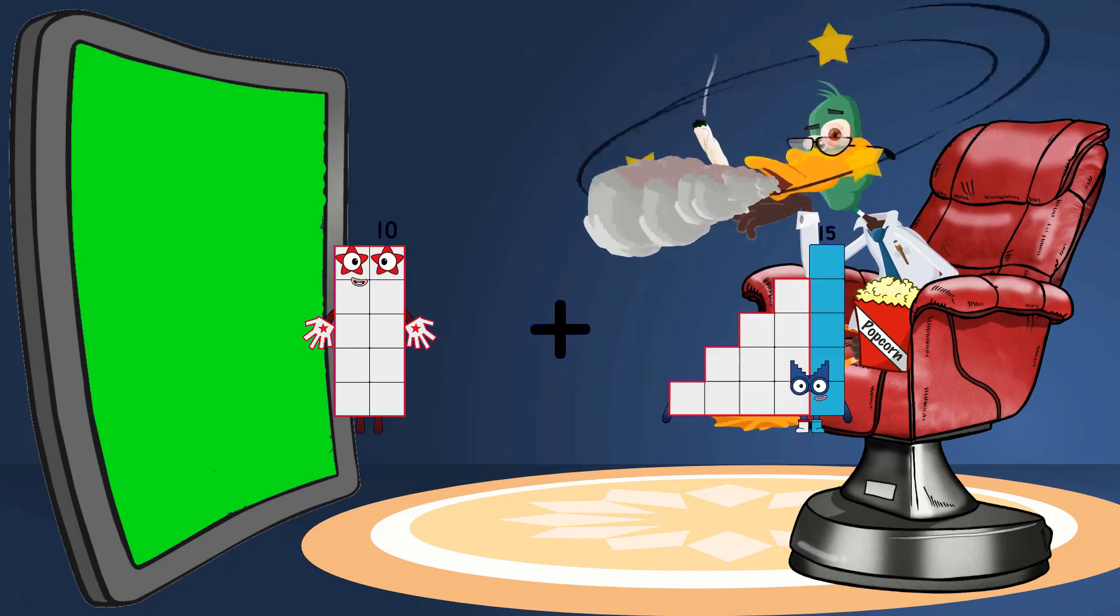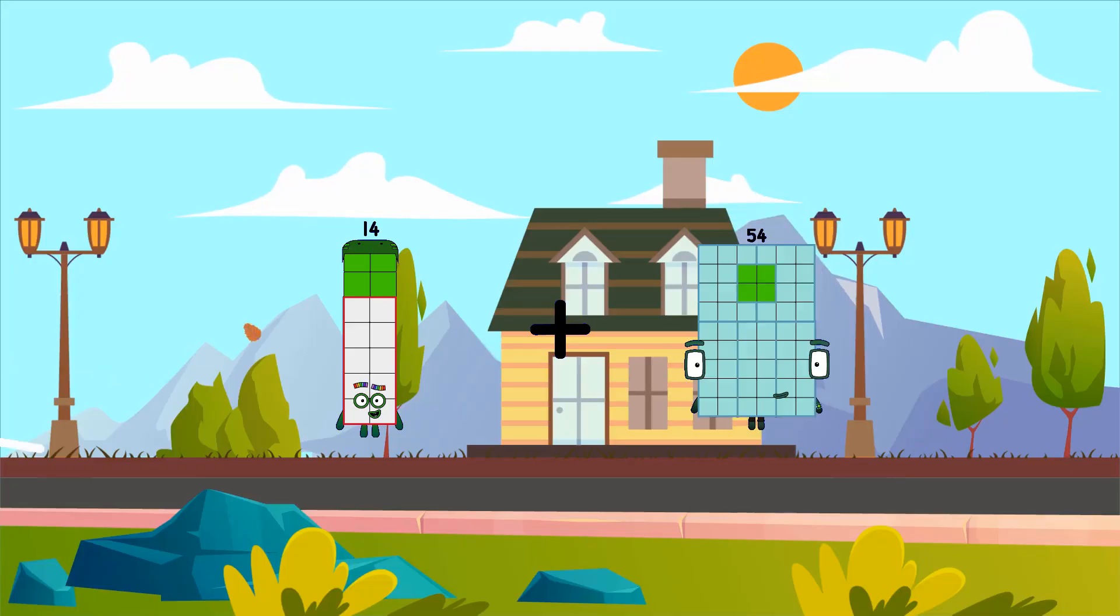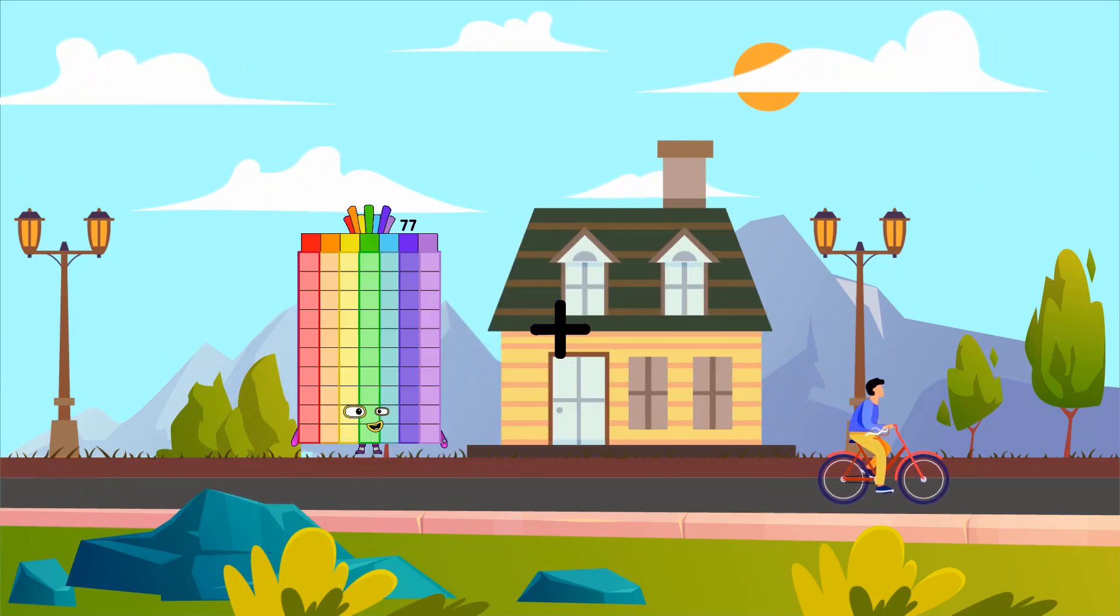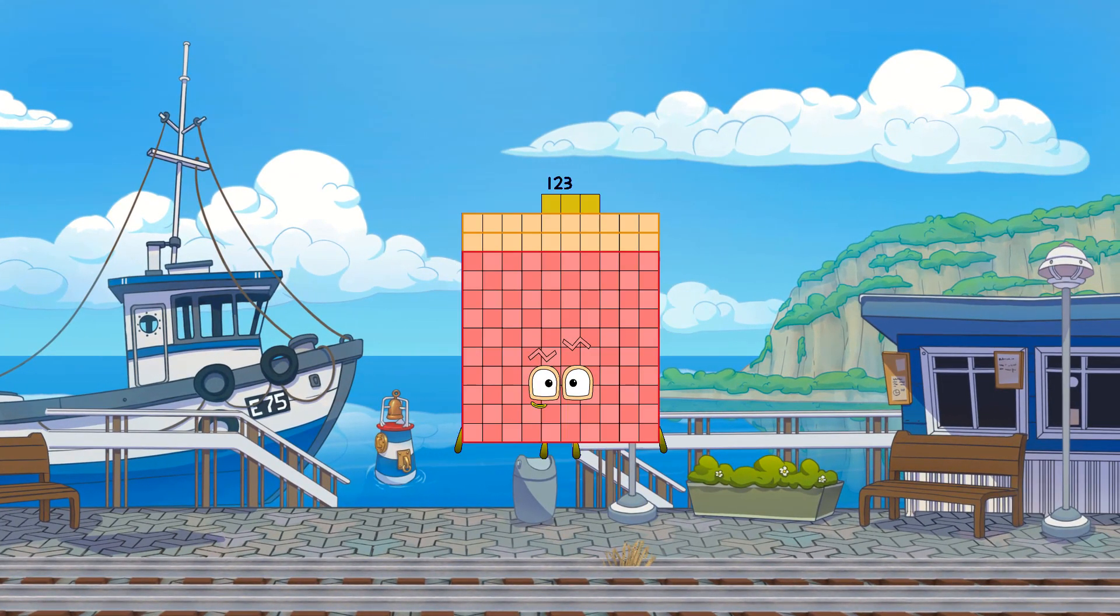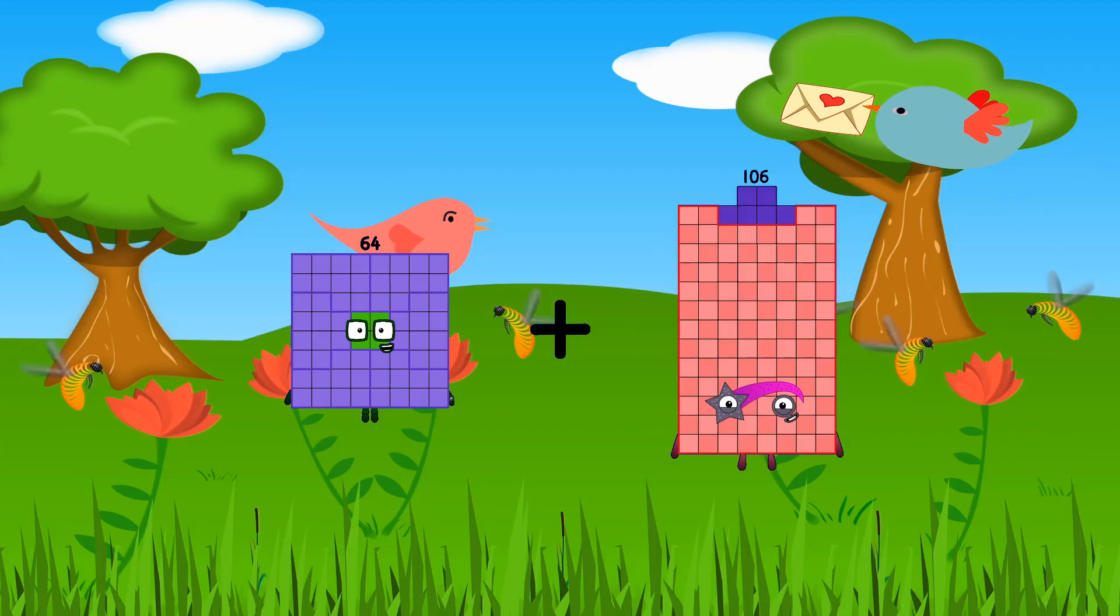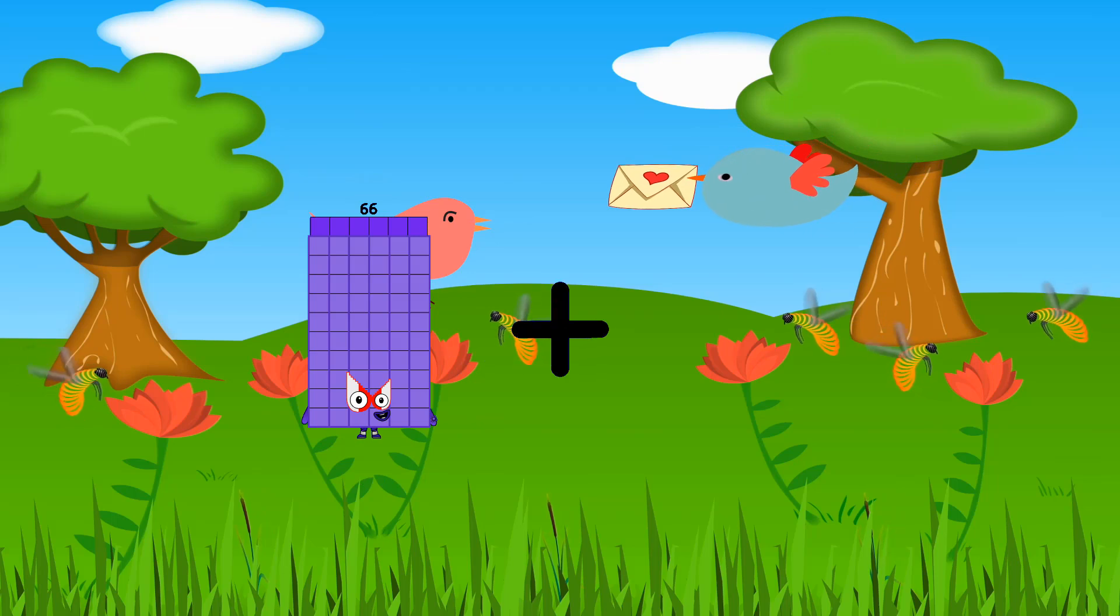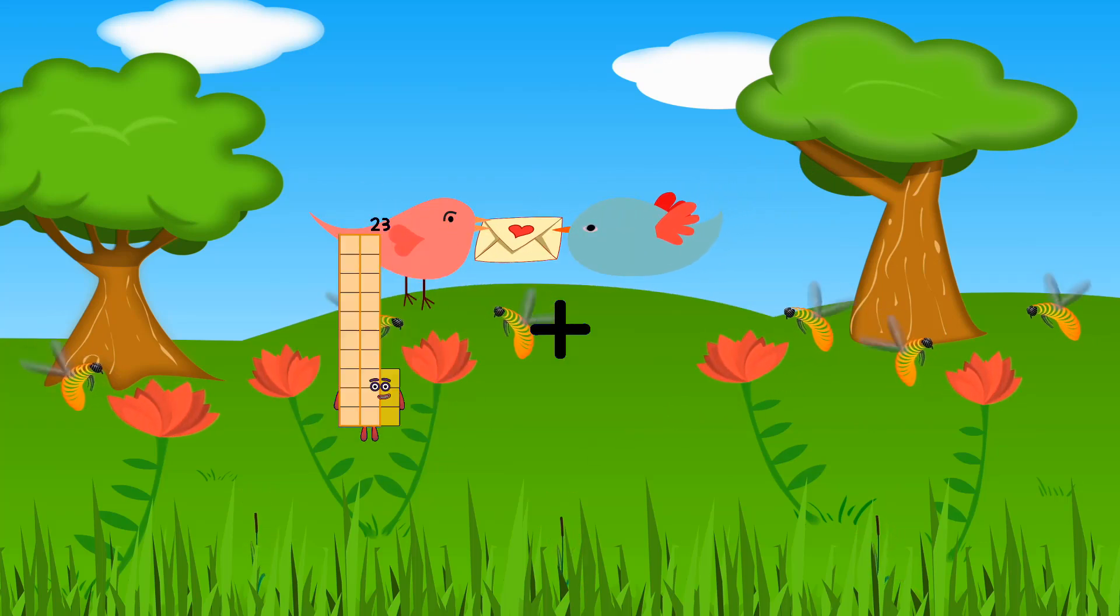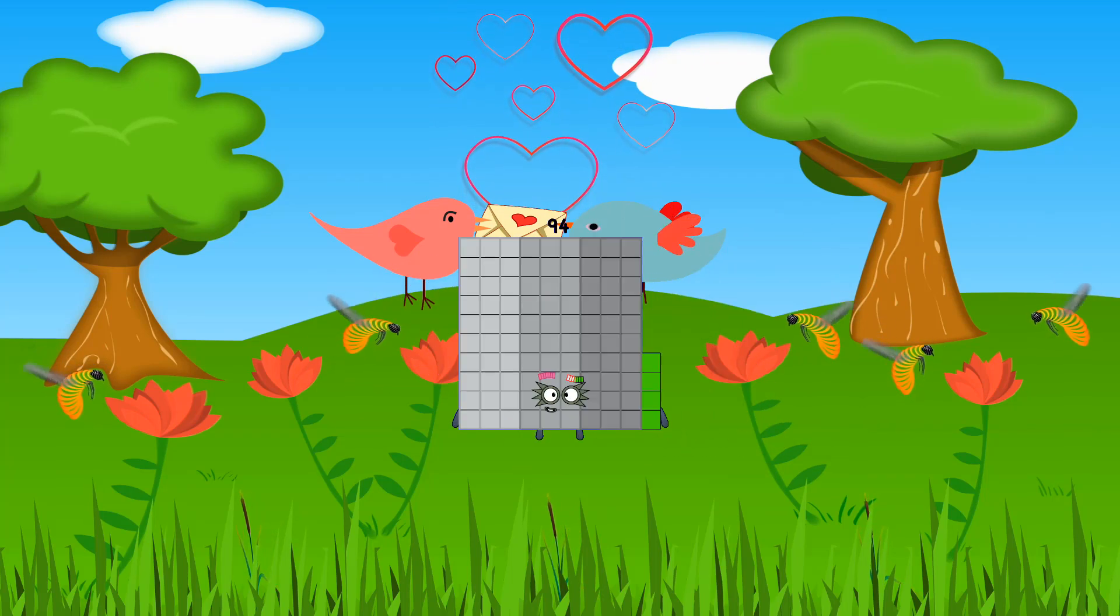10 plus 5 equals 15. 14 plus 51 equals 65. 56 plus 67 equals 123. 64 plus 6 equals 70. 66 plus 21 equals 87. 9 plus 85 equals 94.